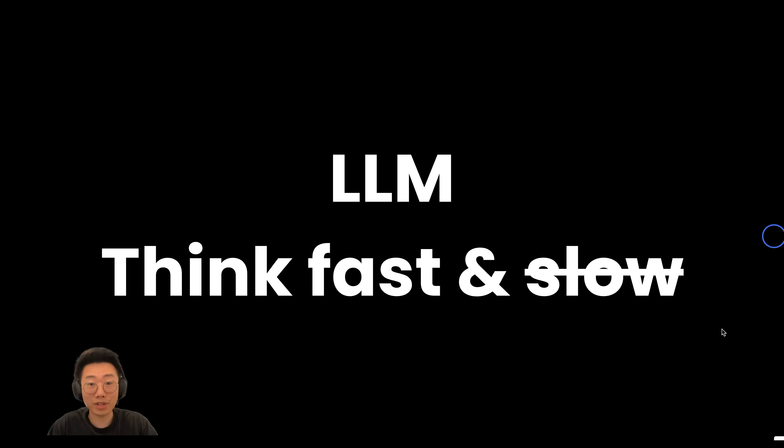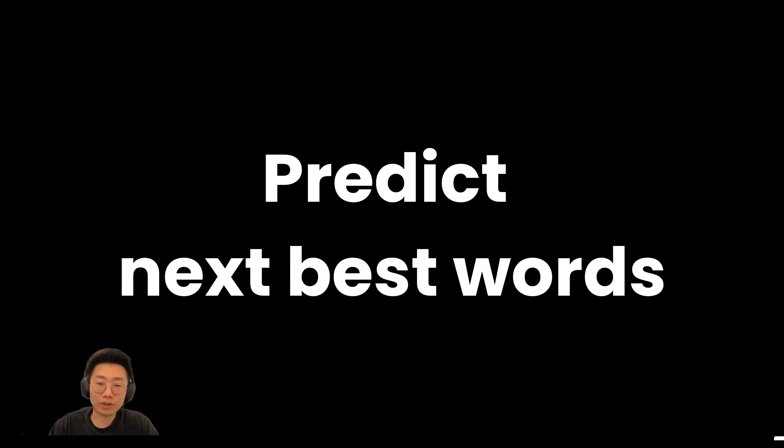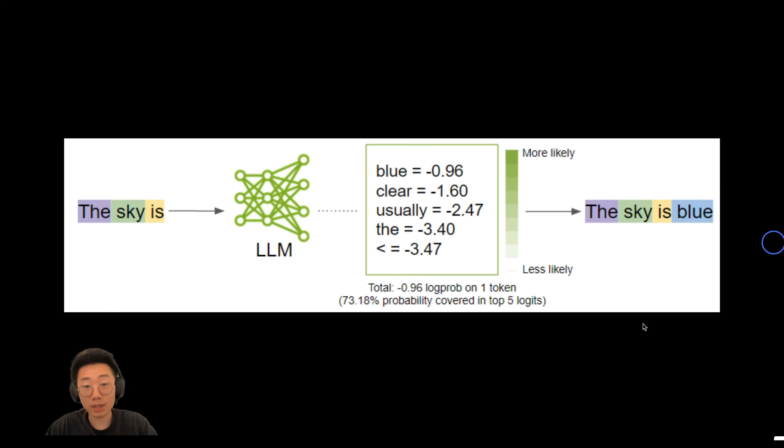And that's also where we are at with large language models. Even though they are already impressive, they didn't really have any system two slow thinking. All they do is just try to predict what the best next words are based on the sequence of words they already have. They don't have any default ability to break down complex tasks into small steps and explore all the different options.